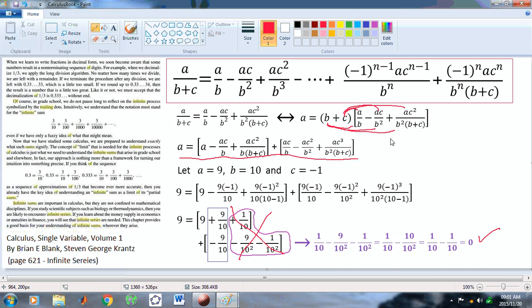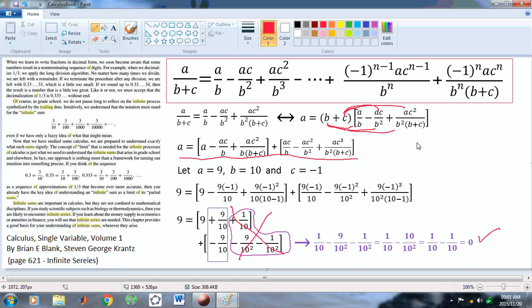So, when you come back and you say something like, if x is equal to 0.999 dot, dot, dot...